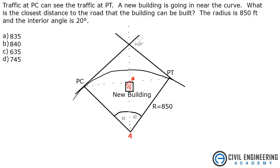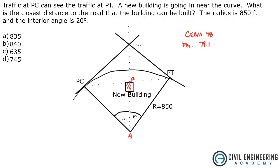We're given an interior angle of 20 degrees, and we're showing that this is I over 2 between these two. In order to look at a good horizontal curve like this, I would go to the Civil Engineering Reference Manual. Chapter 78 specifically goes over horizontal curves, and there's a great figure, 78.1, that goes over horizontal curves and the way this should look. There are a lot of equations there that you should become familiar with when solving these.